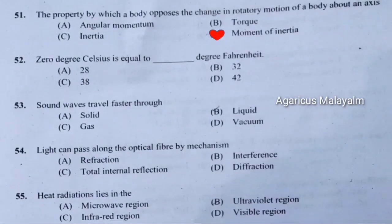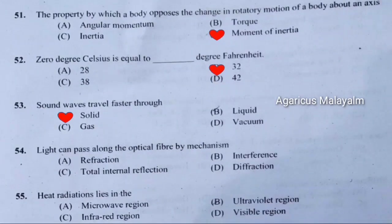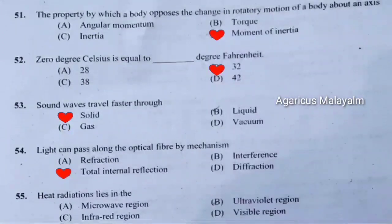Fifty-second question: Zero degrees Celsius is equal to how many degrees Fahrenheit. Correct answer is option B — 32. Fifty-third question: Sound waves travel faster through. Correct answer is option A — solid. Fifty-fourth question: Light can pass along the optical fiber by which mechanism. Correct answer is option C — total internal reflection. Fifty-fifth question: Heat radiation lies in the. Correct answer is option C — infrared region.